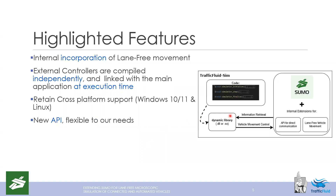The highlighted feature is the internal support for lane-free movement. Controllers for vehicles in lane-free environments can be developed within the dynamic library, and through the API we provide, one can control the vehicles and retrieve information. We retained cross-platform support so it works on both Windows and Linux, and the API was developed to meet both current and projected needs of the project.